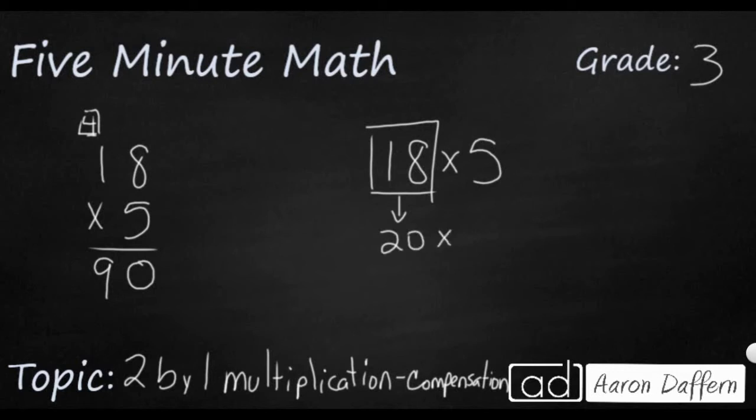And so now I'm going to do 5 times this 20, and I can do that mentally. 5 sets of 20 is going to be 100. If I don't know that, I could say 5 times 2 is 10. And then add that 0 because it's a multiple of 10, and then that's going to be an extra 0 that's going to be 100.